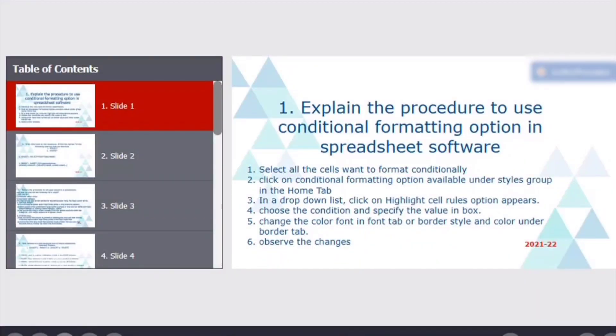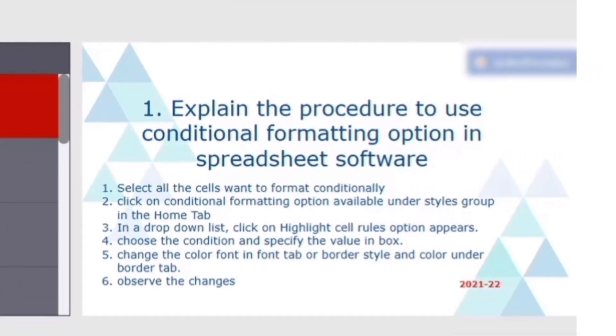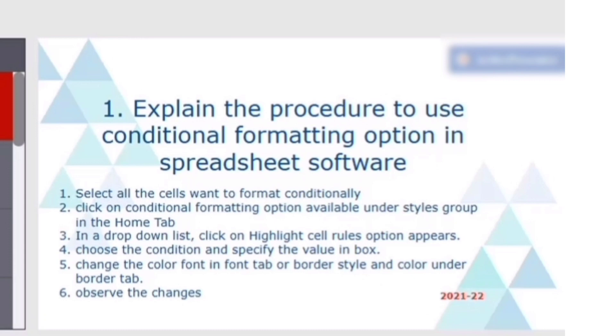So the first question is, explain the procedure to use conditional formatting option in spreadsheet software. And the answer is, select all the cells want to format conditionally, click on the conditional formatting option available under styles group in a home tab. Remember, the conditional formatting option available in styles group in a home tab.